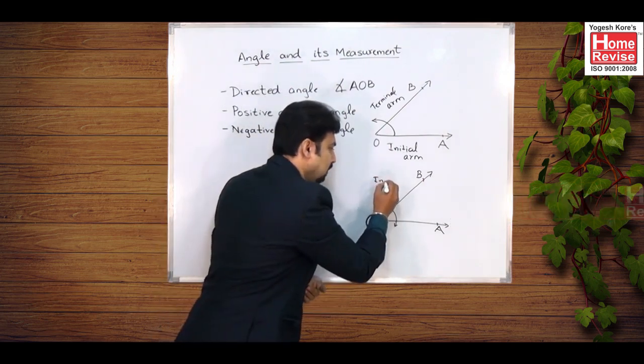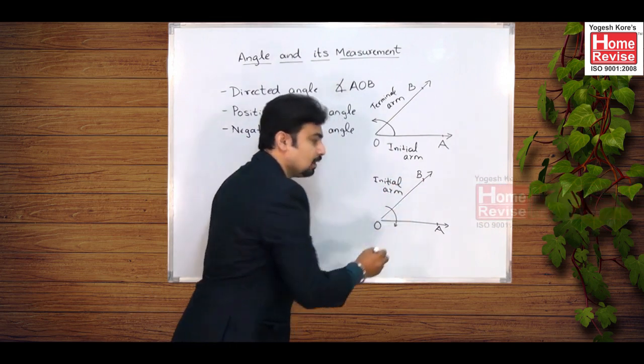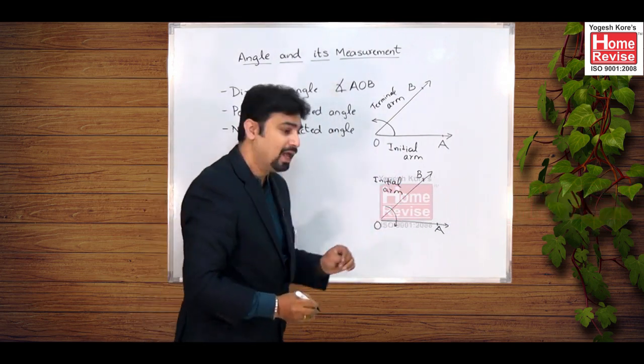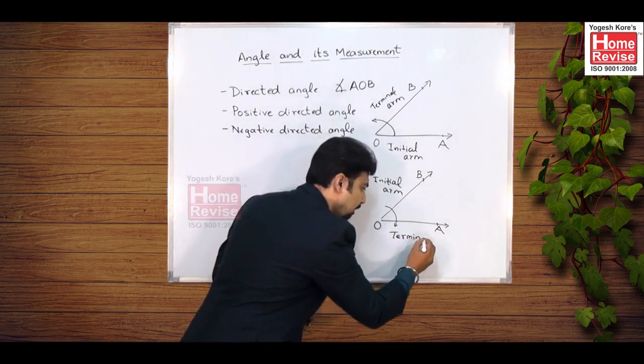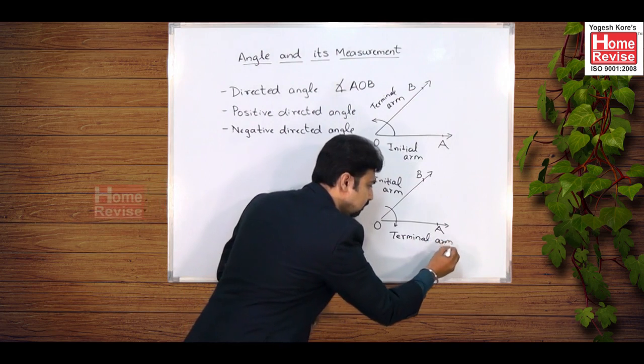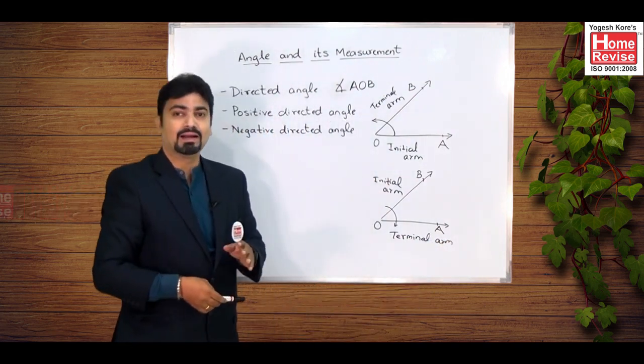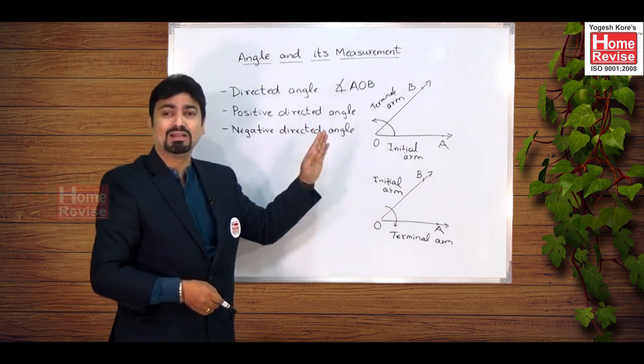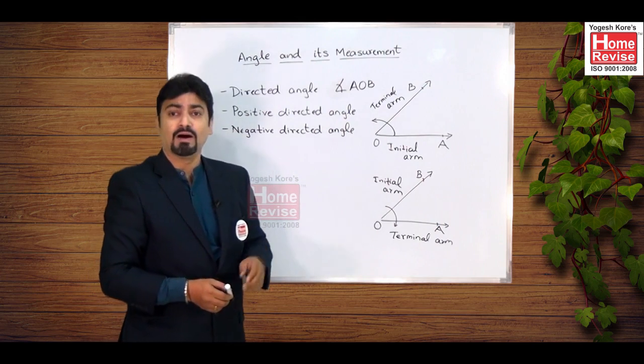Here ray OB will be the initial arm and ray OA will be the terminal arm. Now students, remember that a directed angle drawn in an anticlockwise direction is said to have a measure of positive, so it will be known as positive directed angle.